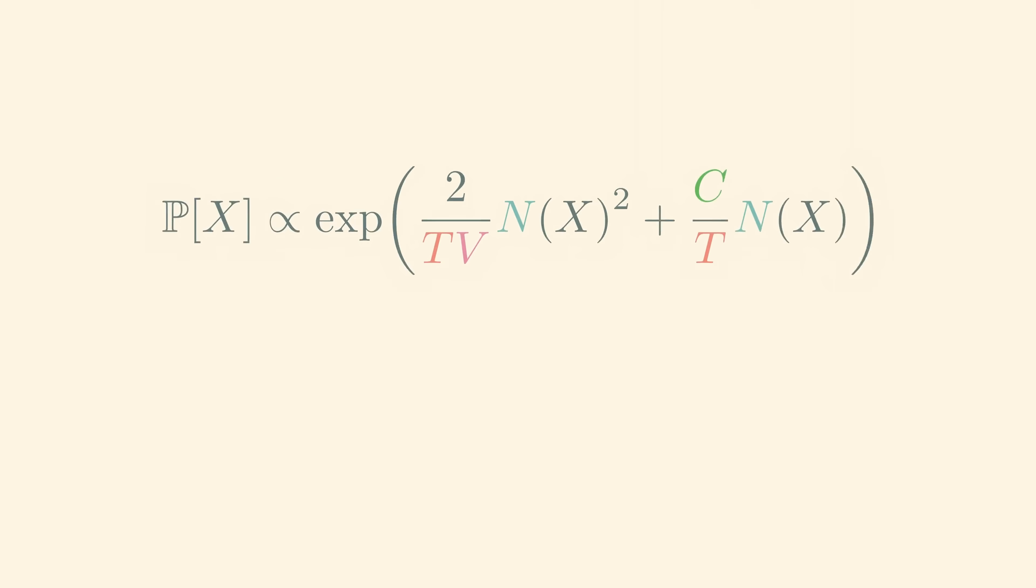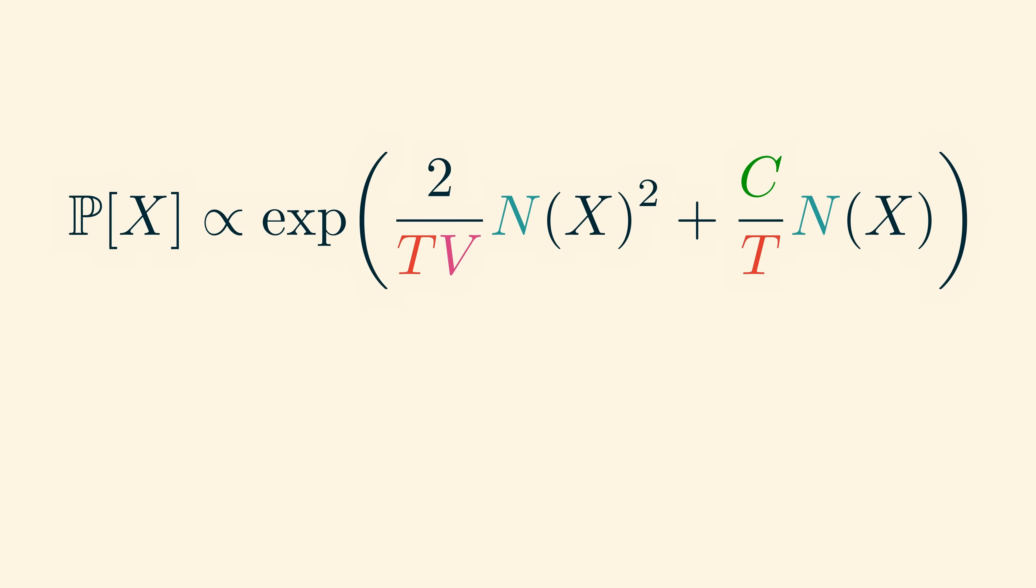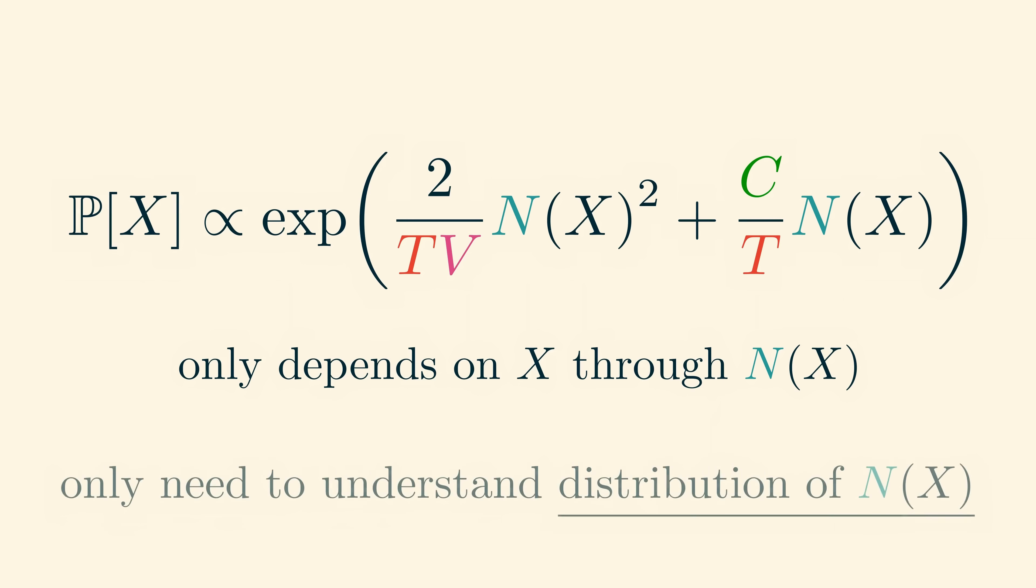In fact, as we can see from the Boltzmann distribution, the only thing that differentiates one microstate from another is the molecule number, n of x. This means that different configurations with the same number of molecules also have the same probability. So, if we want to fully understand this Boltzmann distribution, we really only need to see how the distribution of n of x behaves.